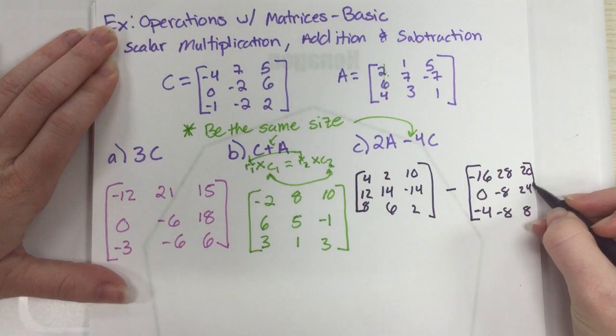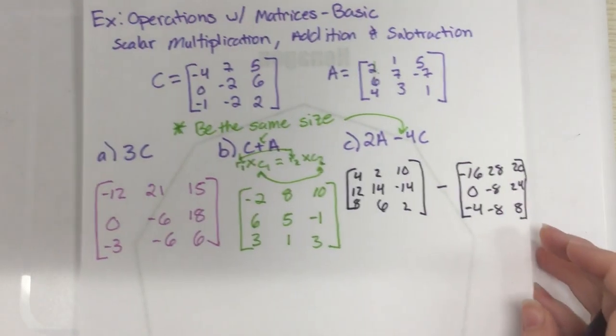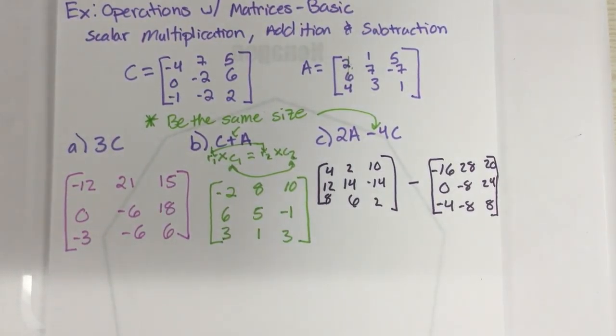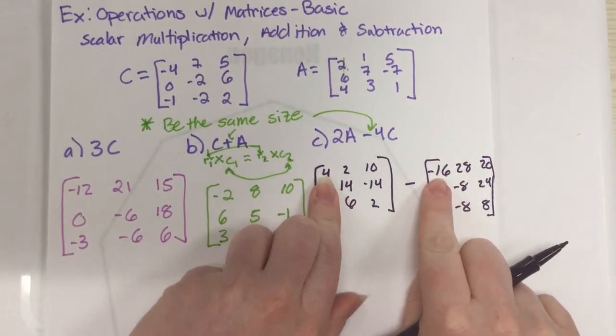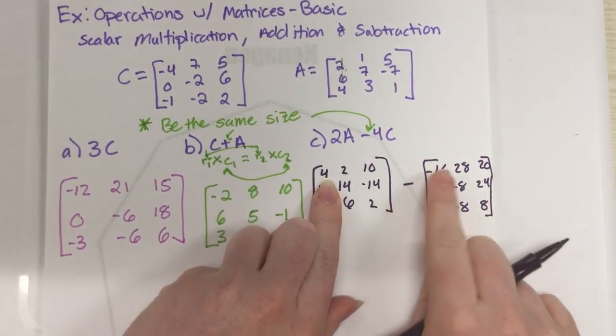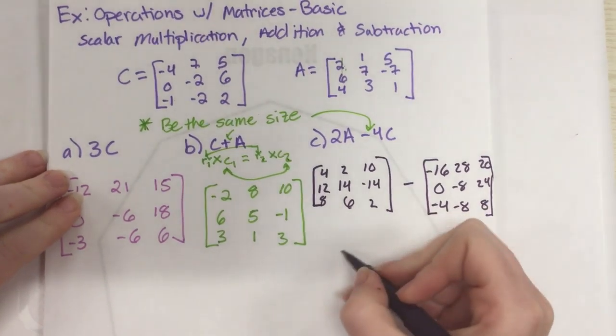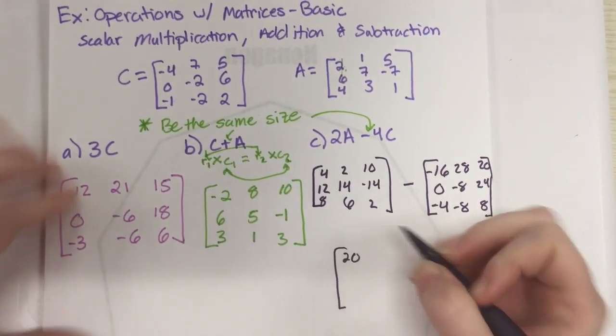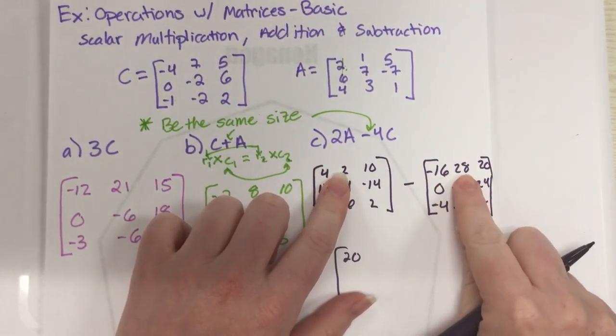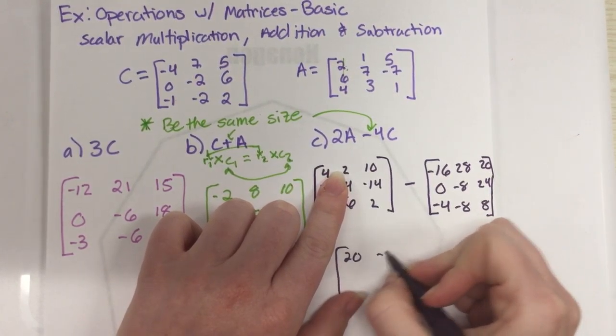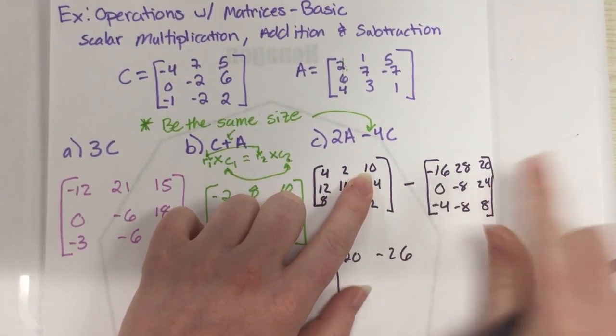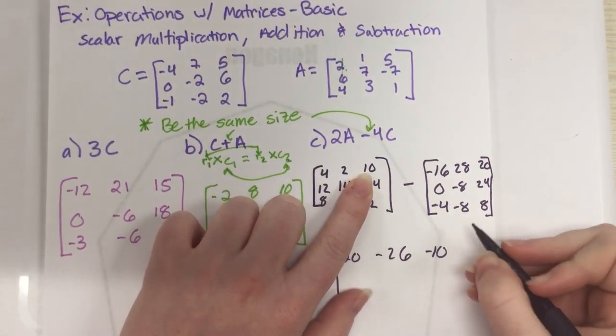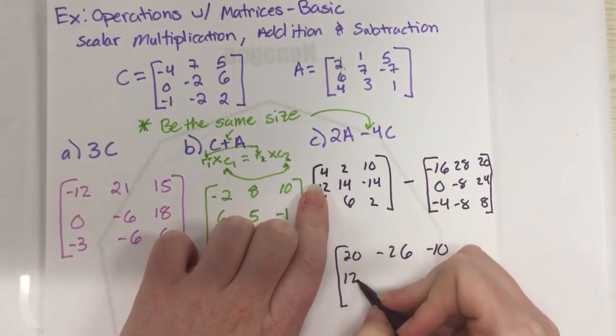For this one, we're actually going to be doing subtraction instead of addition. But it's the same thing. You just take the two spots and you subtract them. So it's 4 minus a negative 16, which that just makes a positive. So that's a 20. And then 2 minus 28. So that's negative 26. And 10 minus 20 is a negative 10. 12 minus 0 is 12.